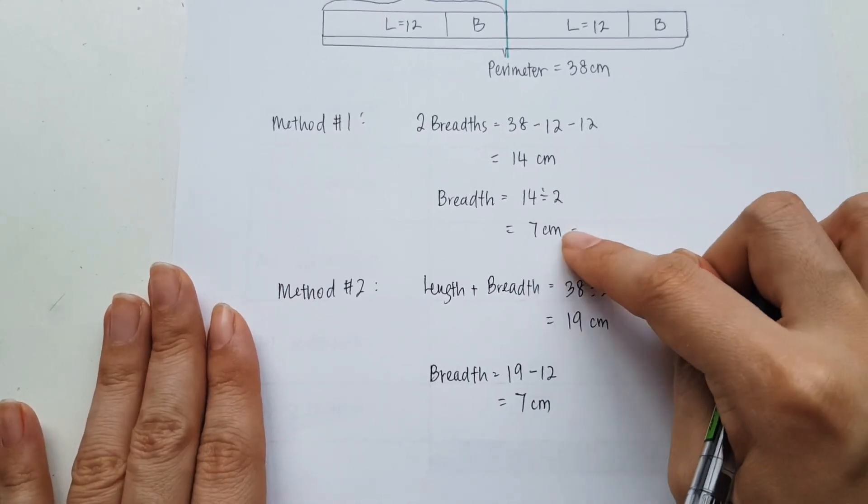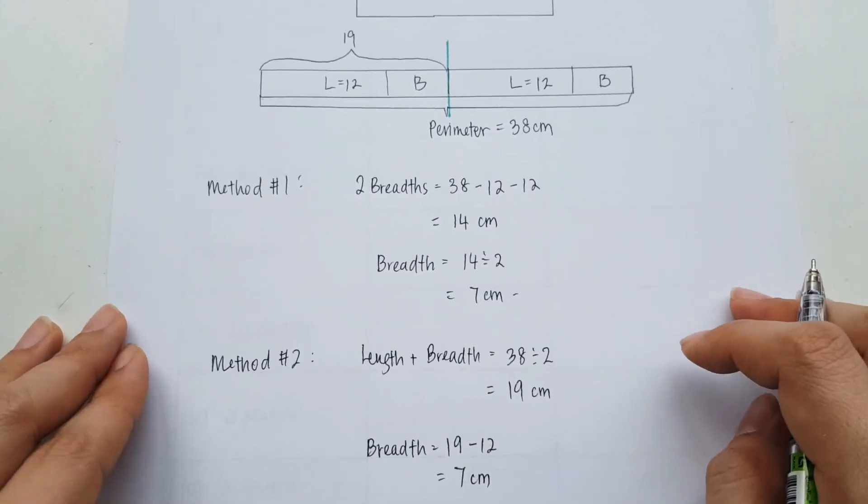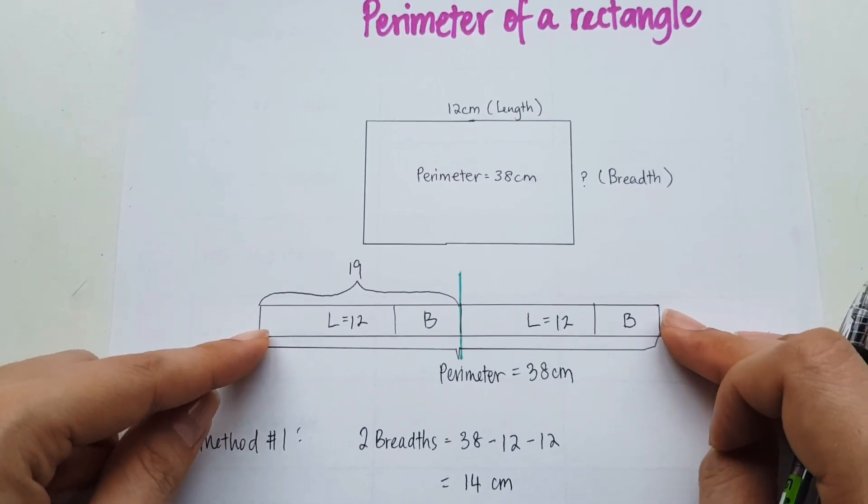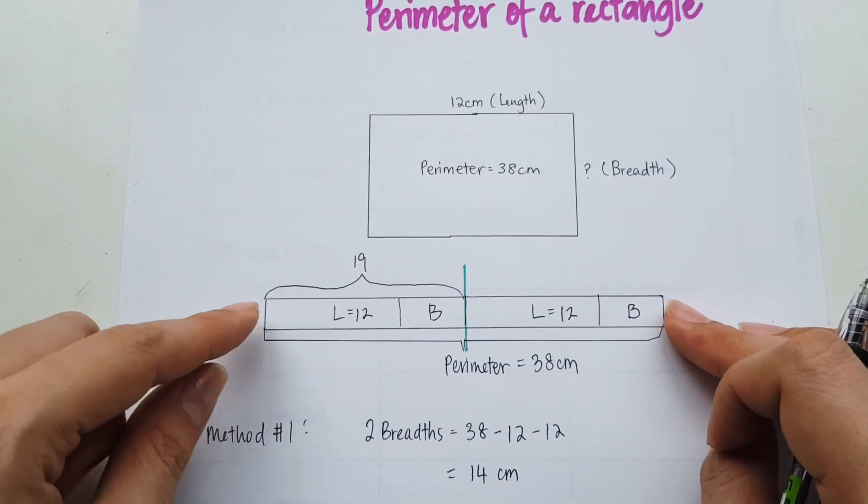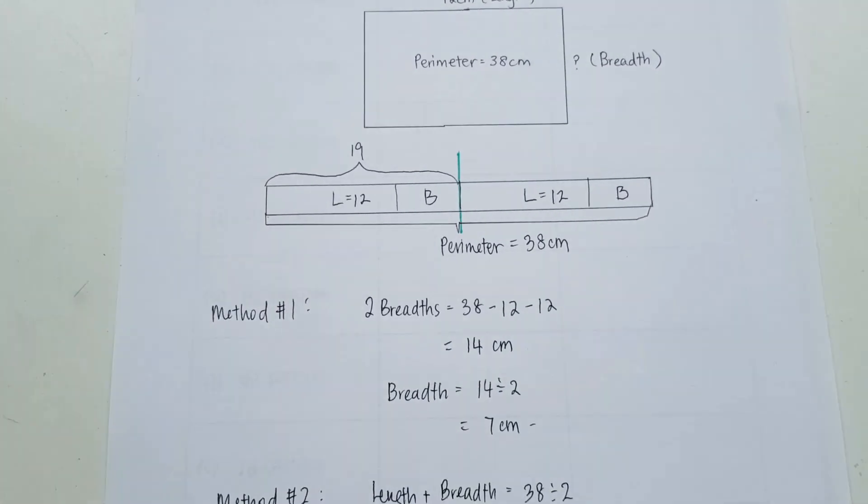And that is exactly the same answer we got in method 1. So it's really up to you, which you find easier. But if you draw a model, everything will be clear. And I really strongly encourage you to be able to understand how this model works.